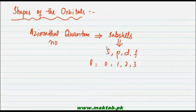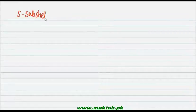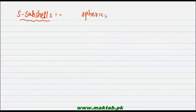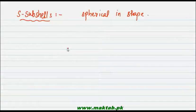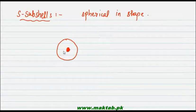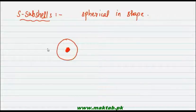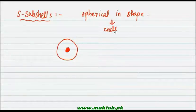We want to see the shape of the sub-shells. The S sub-shells are spherical in shape and they are represented by a circle. For example, if this is the nucleus, this is the S orbital sub-shell around it. This small circle represents 1s.